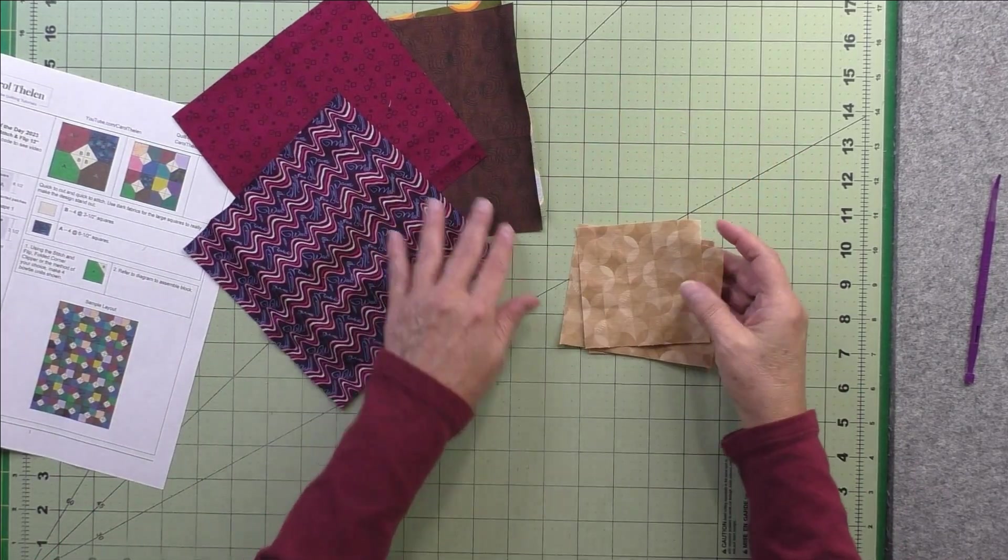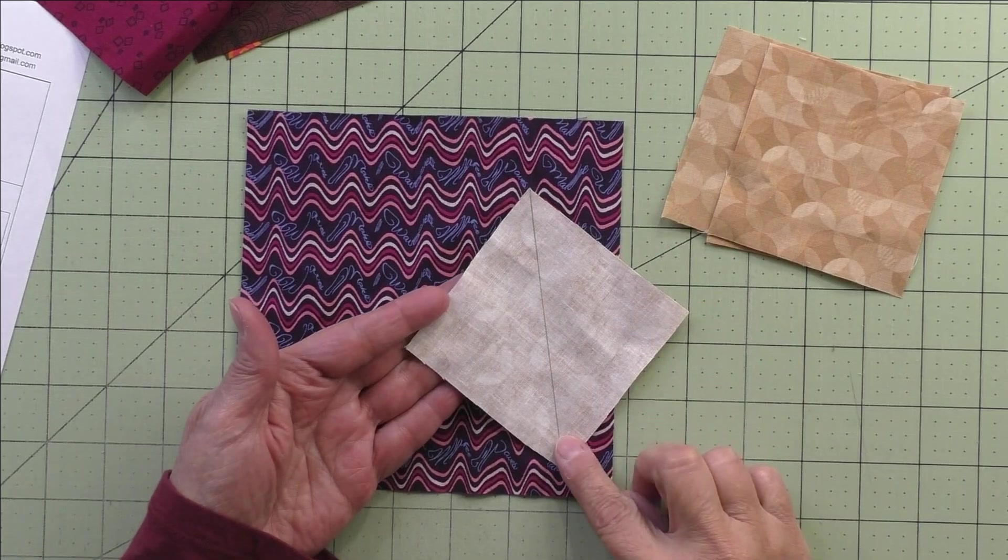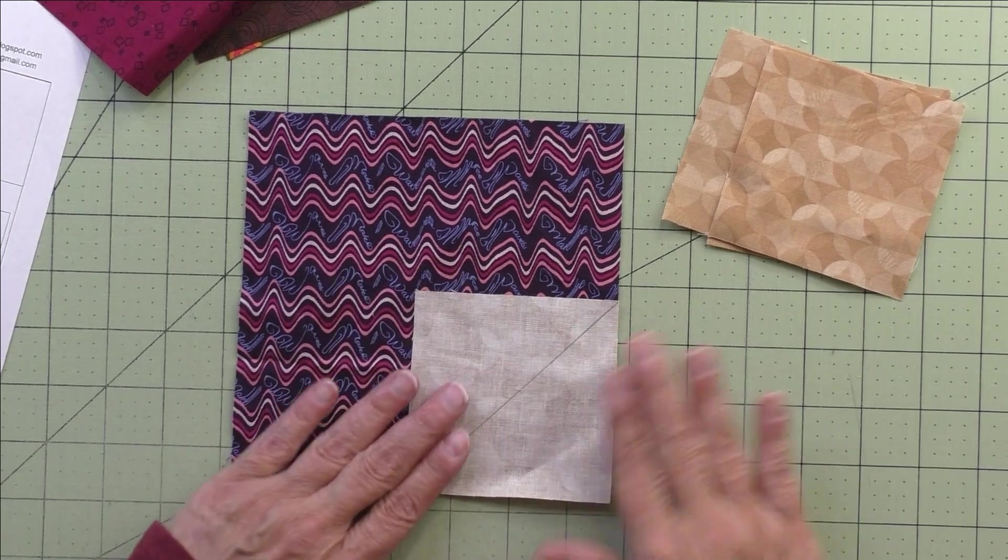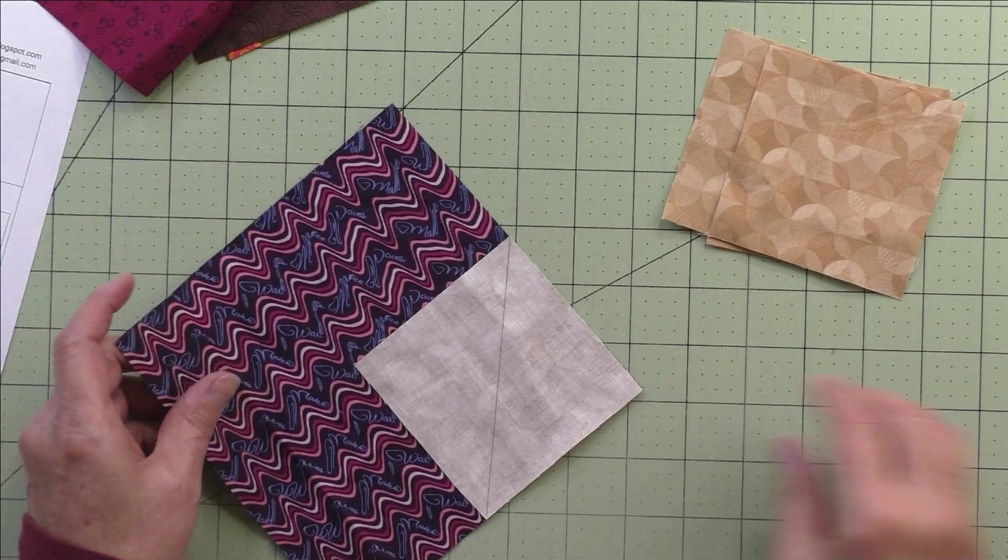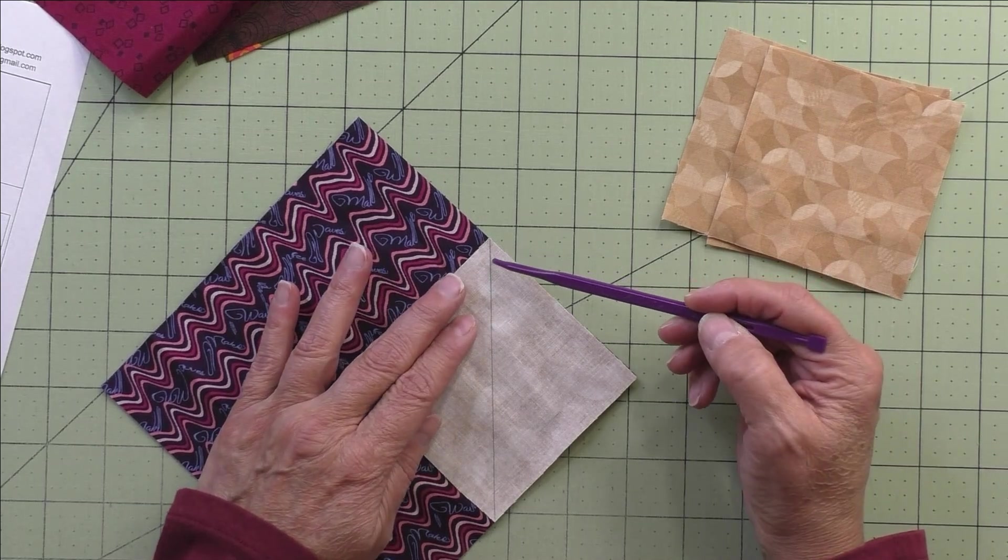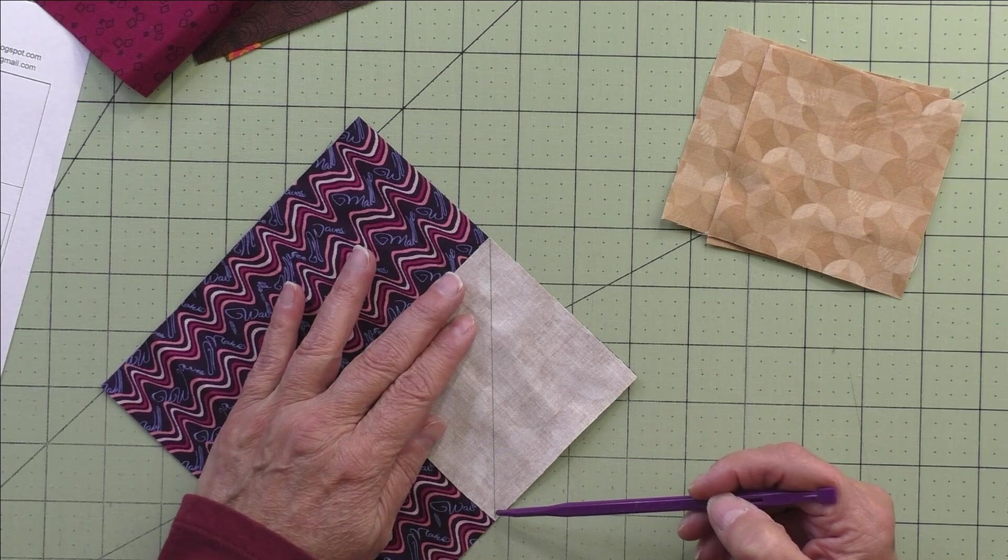For stitch and flip, we draw a diagonal on the back of the small square and we place it in the corner like this. We take this to the machine and we're going to stitch just to the right of this drawn line - not on the line, just to the right - that'll give us sort of like a scant quarter inch.